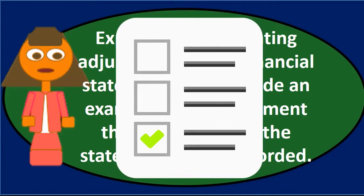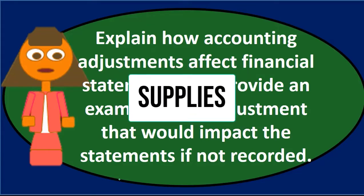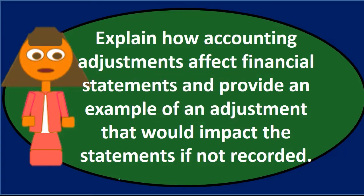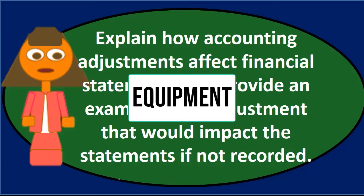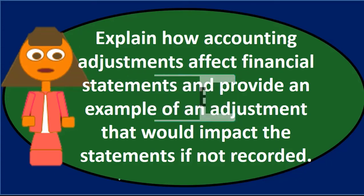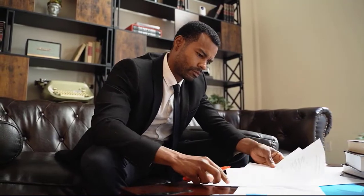There are about six common types of adjusting entries. We have a supplies adjusting entry where we count supplies at the end of the time period and record an expense for supplies used while reducing the supplies asset. We also have equipment depreciation, where we depreciate equipment on the books and record accumulated depreciation and depreciation expense.